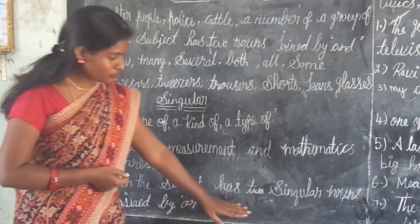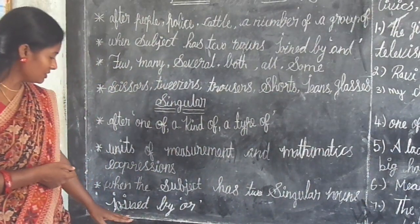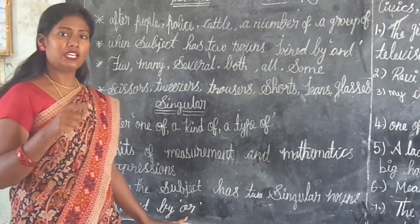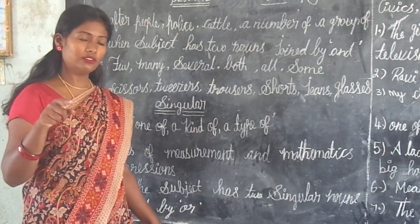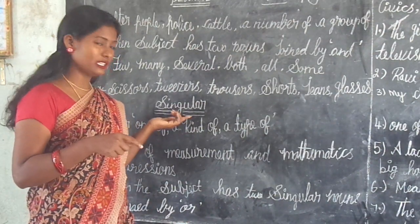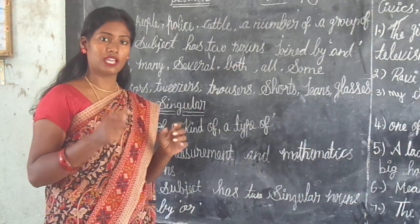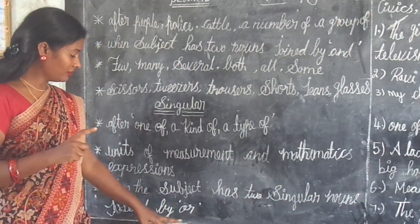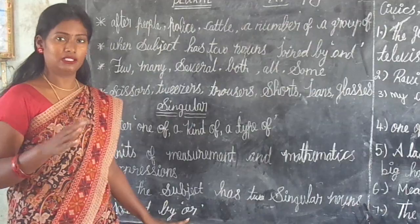When a subject has two singular nouns joined by OR — for example, Ravi or Ravita — the verb is singular. When it is cat and dog joined by OR, the subject closest to OR determines whether it is singular or plural.